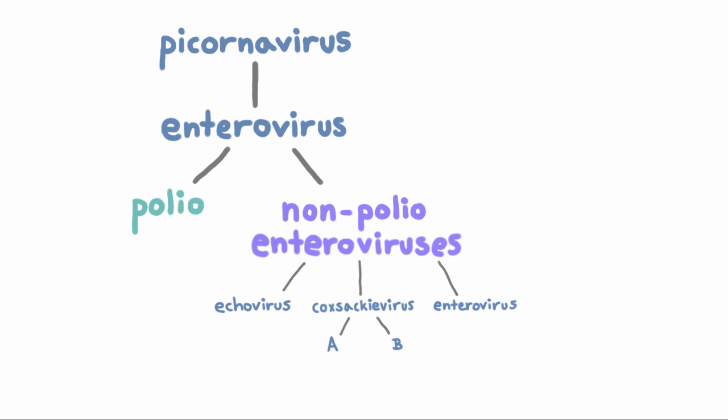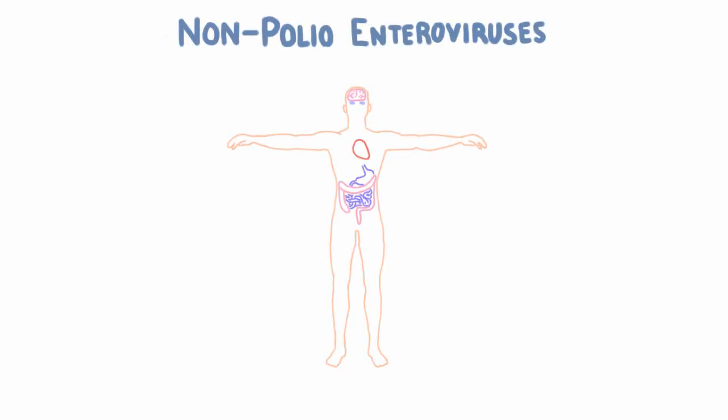So let's talk about what the enteroviruses can do. Like polio, infection always starts in the GI tract, with or without symptoms, and then spreads.